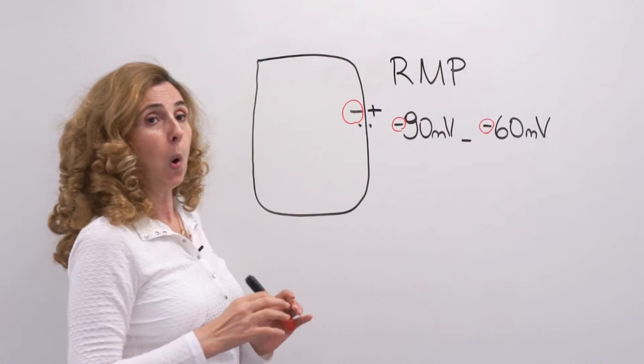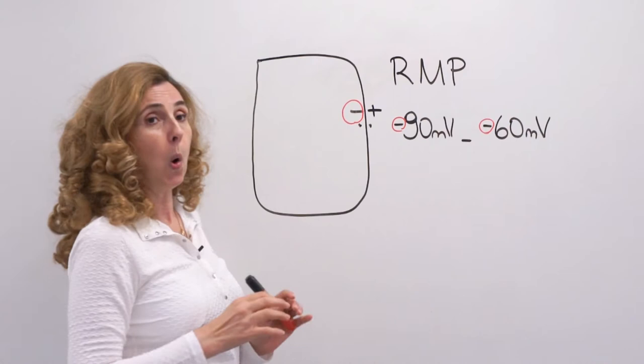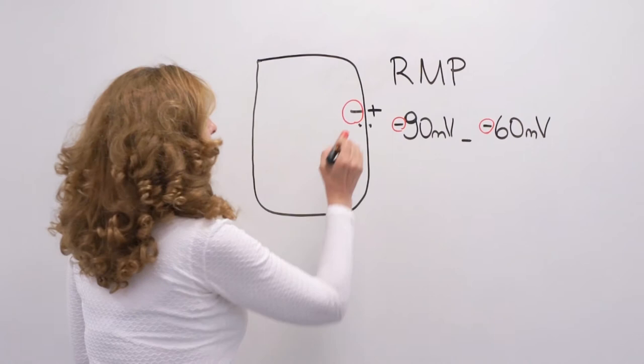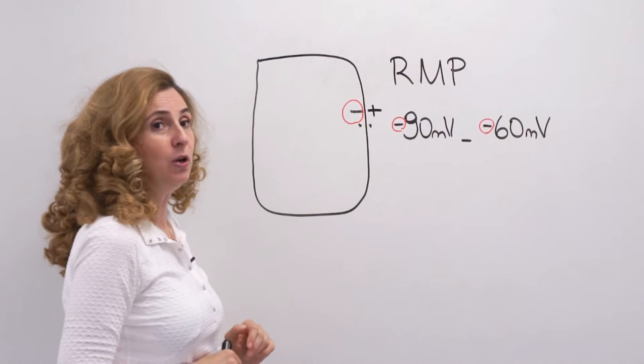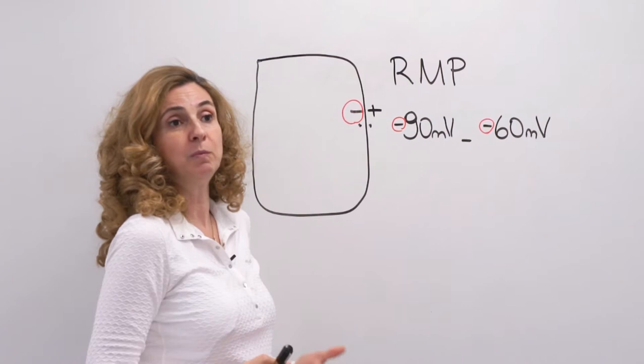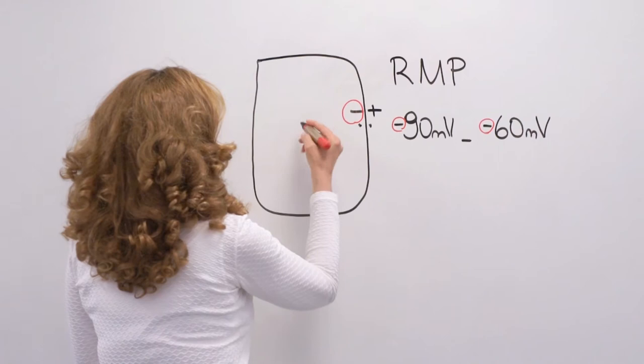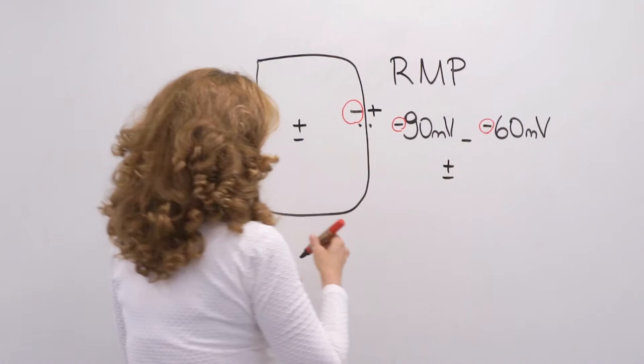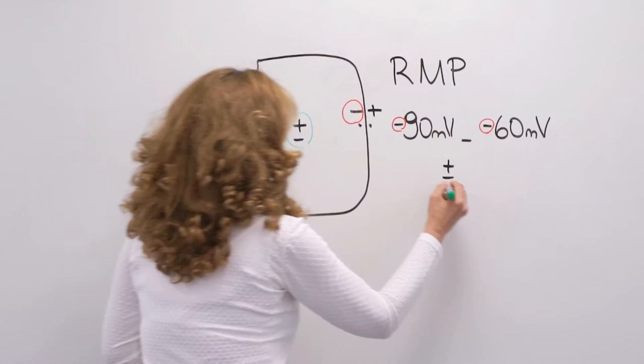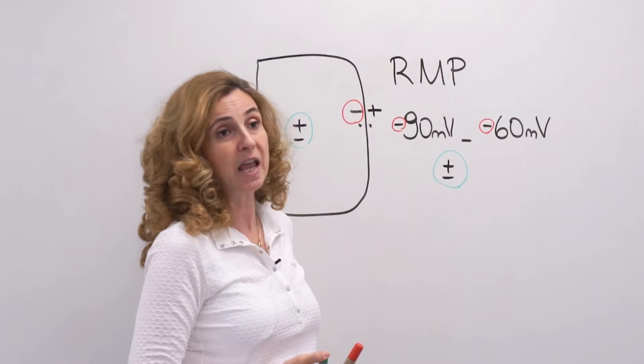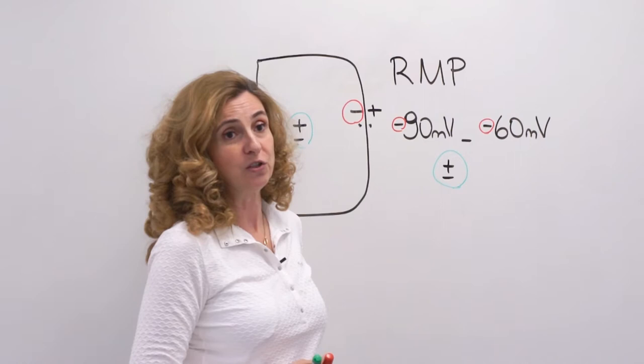May I remind you before going further that all electrical events taking place in the body occur in a very narrow area in the neighborhood of the cell membrane. Therefore, we prefer to call them membrane potentials rather than cell potentials. The rest of the intracellular fluid inside the cell or extracellular fluid outside the cell is electrically neutral, which means that the number of positive charges in these areas are equal to the number of negative charges.